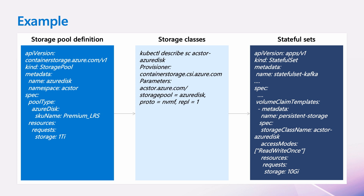When you create a storage pool, or when we create one by default when you enable the service, this will also automatically create a storage class — which you are probably familiar with if you are already leveraging any of our storage drivers. On the right we have a stateful set example with a volume claim template section where we are specifying the storage class name — the storage class that was created automatically as part of the storage pool. You only have to create the storage pool, which will automatically create the storage class, and then the developer can go ahead and use it.